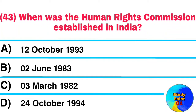Question No. 43. When was the Human Rights Commission established in India? Answer: 12th of October, 1993.